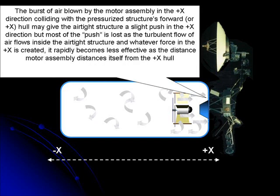The burst of air blown by the motor assembly in the plus X direction, colliding with the pressurized structure's forward hull, may give the airtight structure a slight push in the plus X direction, but most of the push is lost as the air flows inside the airtight structure. And whatever force in the plus X direction is created, it becomes less effective as the motor assembly distances itself from the plus X hull.